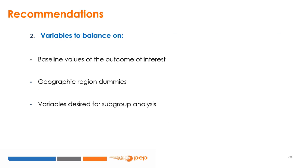When deciding which variables to balance on, some variables are always a good idea to consider. The first are the baseline values of the outcome of interest, as the baseline value is often the most strongly correlated with the future outcome. Geographic region dummies are also worth considering, since treatment implementation and shocks are likely to vary by region. Finally, variables desired for subgroup analysis must be balanced as well in order to avoid bias.